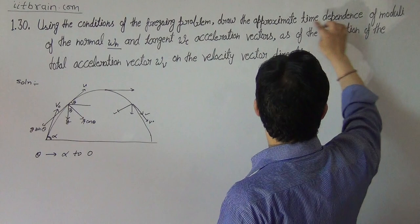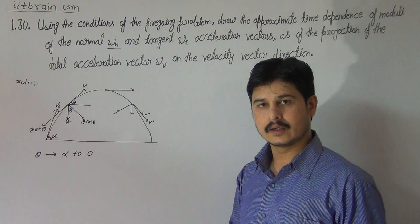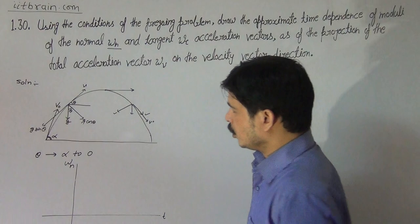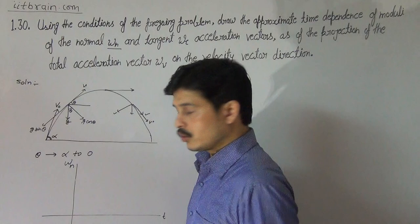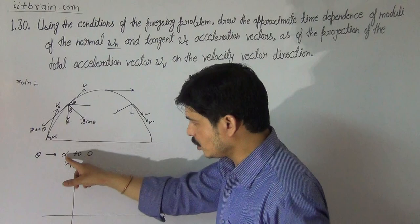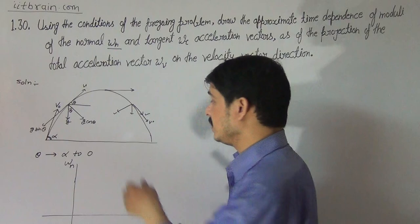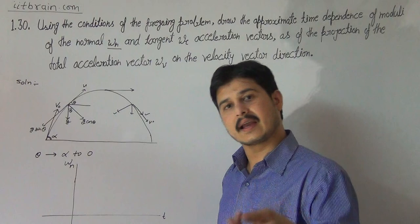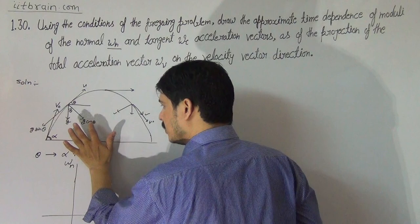Now let us draw the graph of modulus of normal acceleration versus time. Normal acceleration is g·cos(theta). Since cos is a decreasing function and the angle theta decreases from alpha to zero going to the top, g·cos(theta) actually increases numerically — it starts at g·cos(alpha) and increases as angle decreases toward zero.